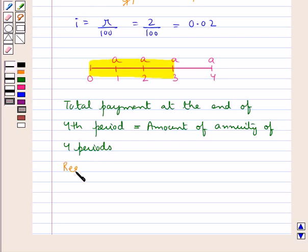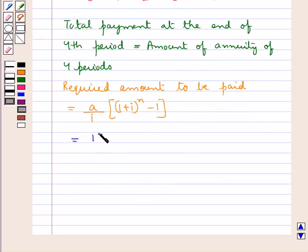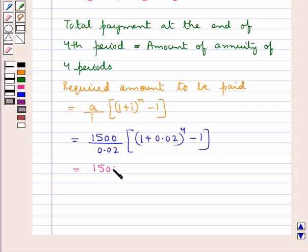Hence, the required amount to be paid would be equal to a/i × [(1+i)^n - 1], which is equal to 1500/0.02 × [(1+0.02)^4 - 1], which is equal to 1500/2. Now we remove this decimal and have ×100, this into (1.02)^4 - 1.